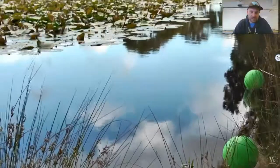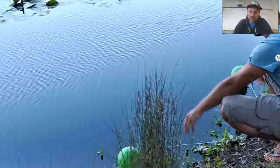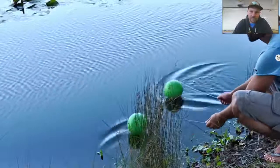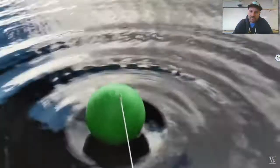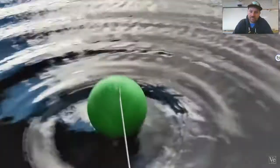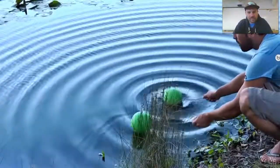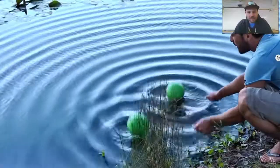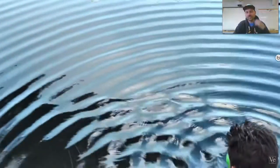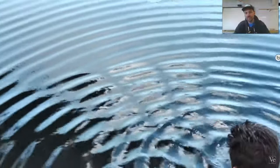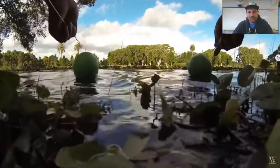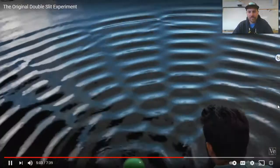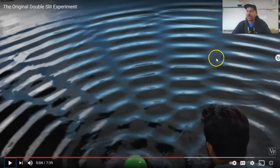I've got a demonstration here on a little pond where we can see this with water waves. I have two sources of ripples, which are basically like the two slits. When I create ripples with a single source, they travel out with circular wave fronts. Nothing particularly surprising there. But if I add a second source of ripples, then we start getting an interesting pattern. This pattern is created by the ripples from the two sources interacting with each other.